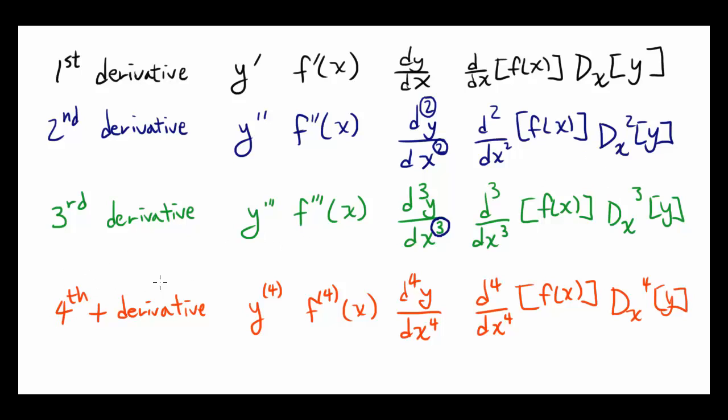Starting with fourth derivative, instead of putting the primes, instead of putting this, you're going to put the parenthesis and the number inside. If it's fourth derivative, you're going to put it like this. If it's fifth derivative, it's going to be something like this.